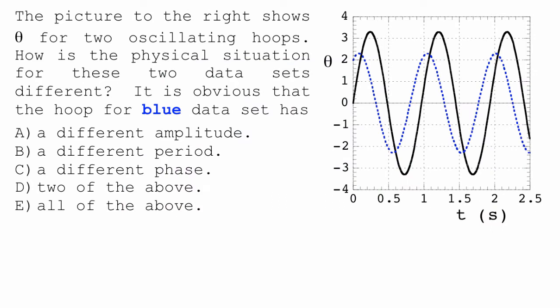It's just a question of where the periods come from. So, another question. The blue and the black. It's obvious that the hoop for the blue data set has what?